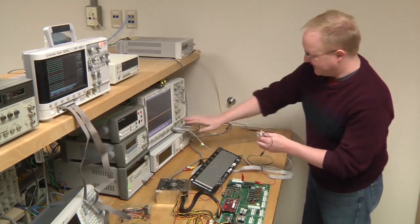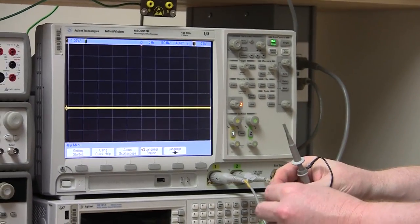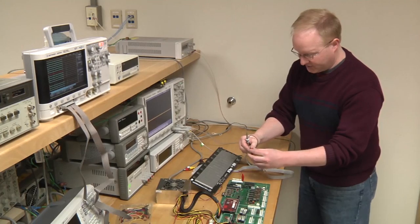So here's your scope probe. They attach here. They're already attached in this case. And you always want to ground it, otherwise it won't work. So we're going to attach this to our ground reference.